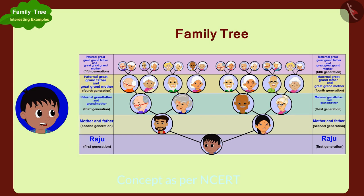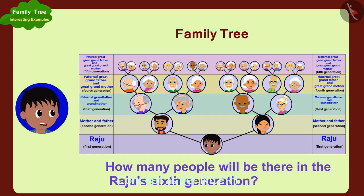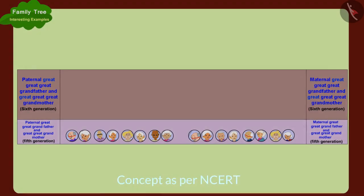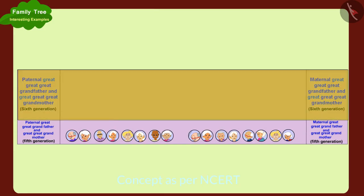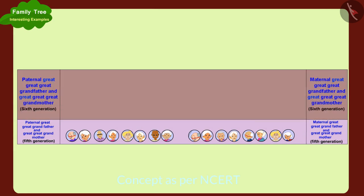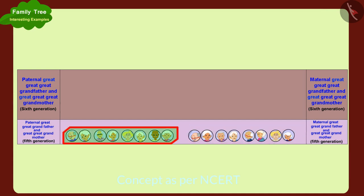Children, can you tell how many people will be there in Raju's sixth generation? If you wish, you may stop the video and find the answer. To make Raju's sixth generation, we need to add the parents of his maternal great great grandfather and great great grandmother, and parents of his paternal great great grandfather and great great grandmother to his family tree.